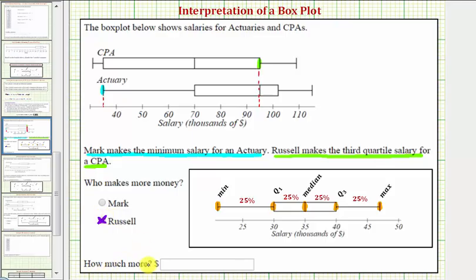Our last question is how much more does Russell make? Looking at the horizontal scale here, we know Russell makes ninety-five thousand dollars per year and Mark makes thirty-five thousand dollars per year. Ninety-five thousand minus thirty-five thousand is sixty thousand, so Russell makes sixty thousand dollars more per year than Mark.